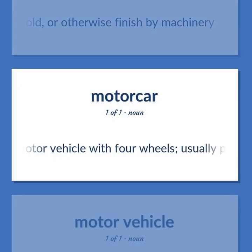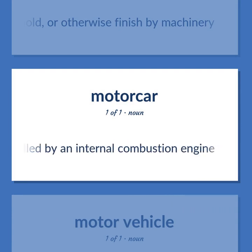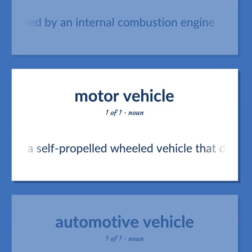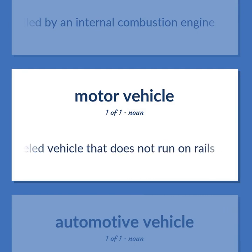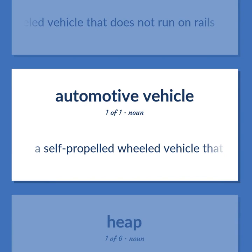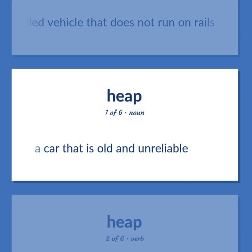AUTOMOBILE: A motor vehicle with four wheels, usually propelled by an internal combustion engine. A self-propelled wheeled vehicle that does not run on rails. A car that is old and unreliable.